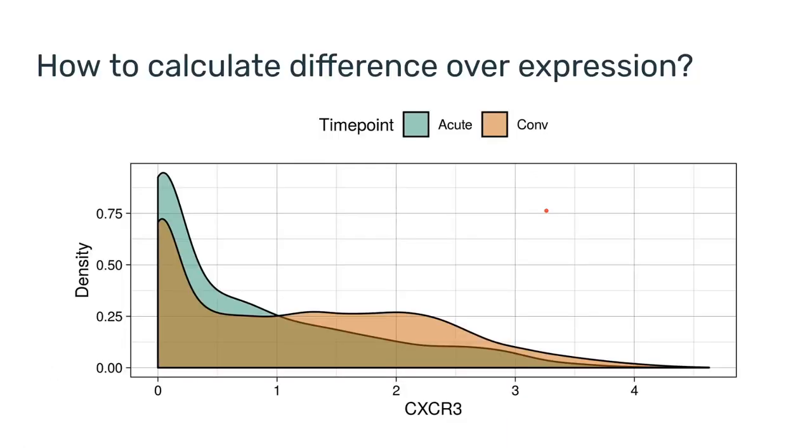So how do you actually calculate differential expression? There's a few different approaches. Starting from the beginning, why is this so difficult? I'm seeing two different samples here—this is one patient, and we're seeing two distributions of CXCR3 for the acute time point in teal and for the convalescent time point in light orange. We would like to quantify these differences. These are distributions, so we can use, for example, a t-test.